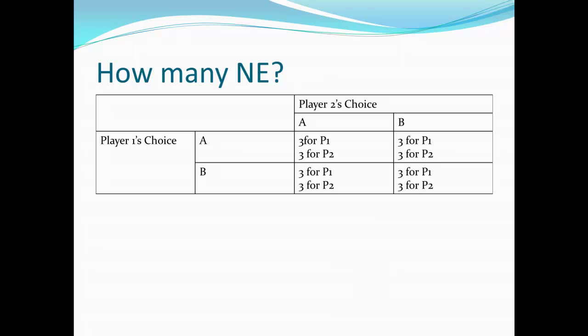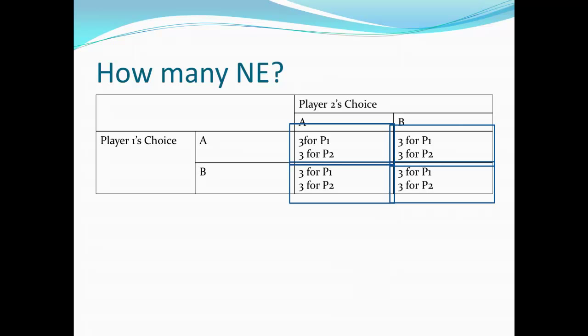Now consider this rather boring case where it doesn't matter what player 1 or player 2 does — everybody gets 3. In this case, all outcomes are Nash equilibria, because anything is the best response when there is no better response; everything is equally good. Not a particularly interesting case since the outcome is the same regardless, but it's still a theoretical possibility. So you could have one Nash equilibrium as in a prisoner's dilemma, two as in the coordination game, three, four, or none at all as in matching pennies.